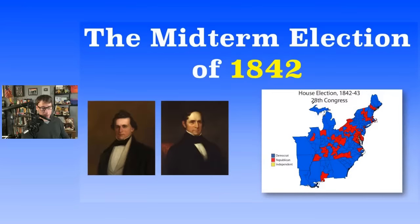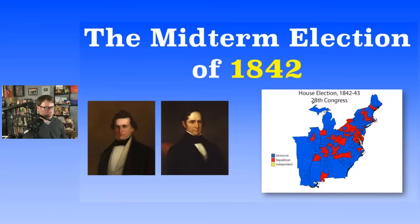The Whigs had gained a majority in the House — John White was a Whig, and 1840 was a great year for the Whig Party, unless you were William Henry Harrison dying. Willie Person Mangum was also a Whig. The Whigs had control going into 1842.